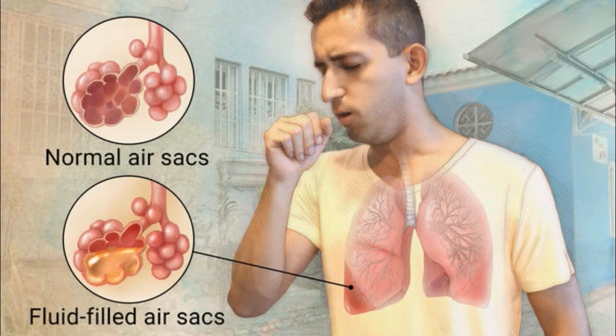The following environmental factors also increase a child's susceptibility to pneumonia: indoor air pollution caused by cooking and heating with biomass fuels such as wood or dung, living in crowded homes, and parental smoking.